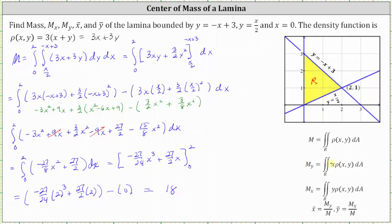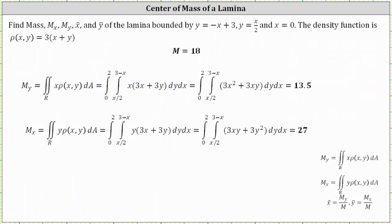The next step is to determine the moment about the y-axis and the moment about the x-axis, and then we can determine the center of mass given by x-bar and y-bar, where x-bar is the moment about the y-axis divided by the mass, and y-bar is the moment about the x-axis divided by the mass. For the moment about the y-axis, the integrand is x times the density function, giving us three x squared plus three x y. Working this out with the same order and limits of integration, the moment about the y-axis is equal to 13.5. For the moment about the x-axis, the integrand is y times the density function, giving us three x y plus three y squared. The moment about the x-axis is equal to 27.